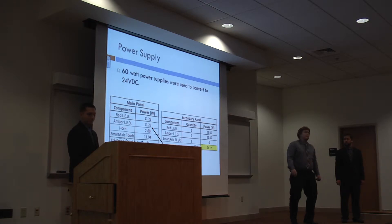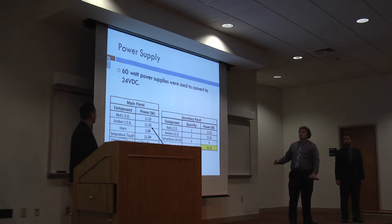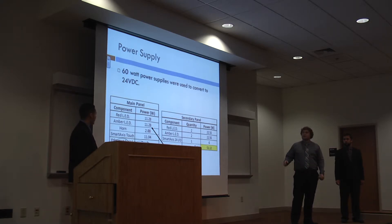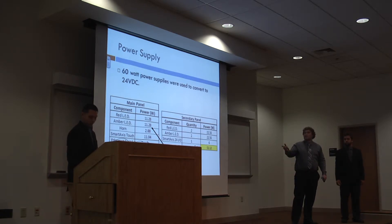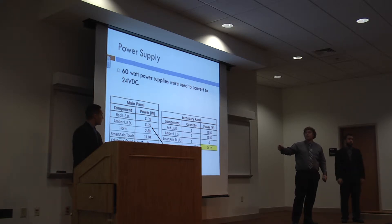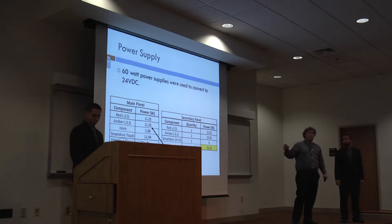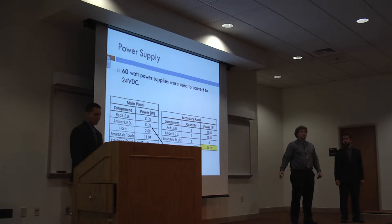For our power supply, we ended up going with an IDEC 60-watt. To determine that, we found the power needed to supply each component in the system. As you can see, our main panel will only need roughly 40 watts, and our secondaries will need 52. But that is with every light turned on at the same time, which shouldn't ever happen in the program.